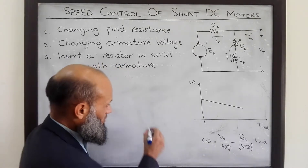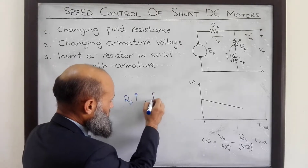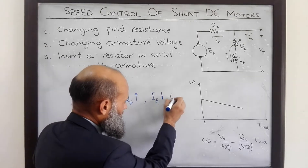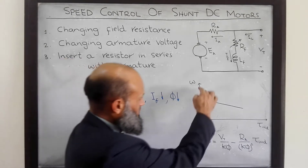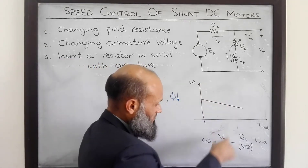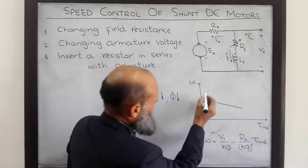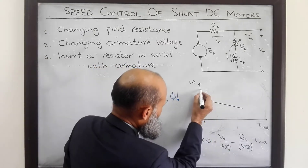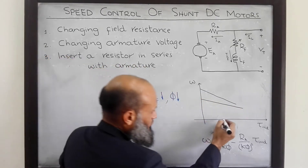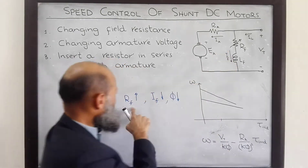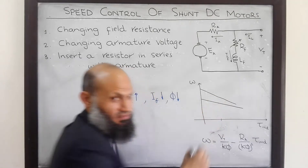If we increase field resistance, that results in a decrease in current, which in turn results in a decrease in flux. A decrease in flux is associated with an increase in the vertical intercept of this line and also a steeper slope. That is, by decreasing flux we get these torque-speed characteristics. So for a given load, if we increase the field resistance, flux decreases and the machine runs at a higher speed.